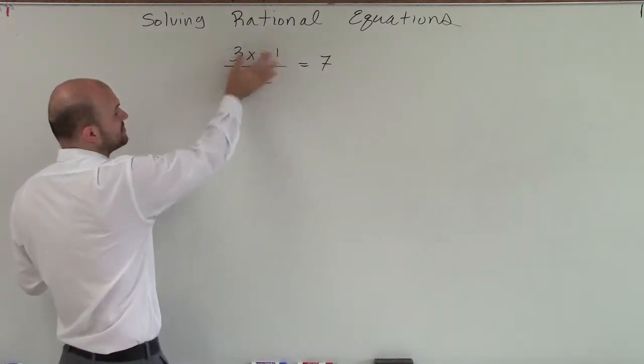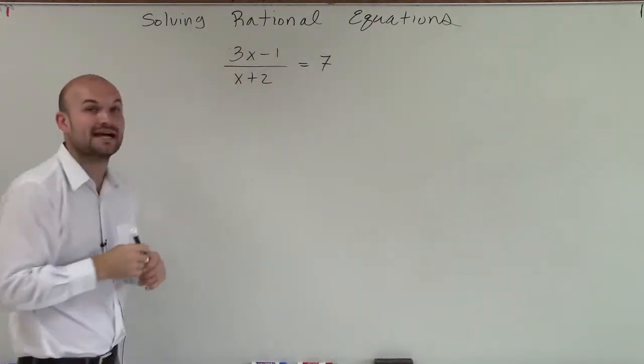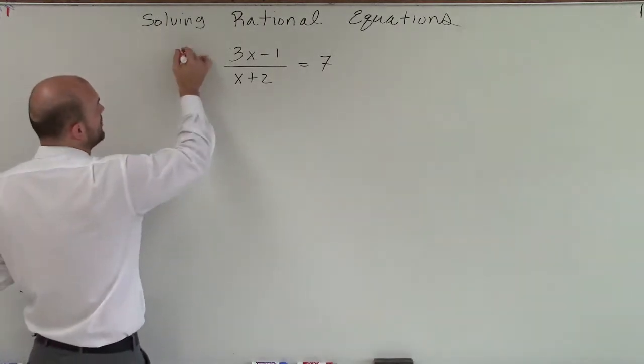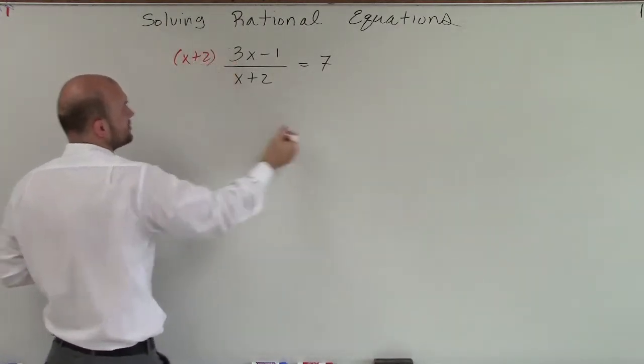So to do that, we see that this 3x minus 1 is being divided by x plus 2. So I need to undo this. I need to get that x out of the bottom. So to do that, I'm going to multiply by x plus 2 on both sides.